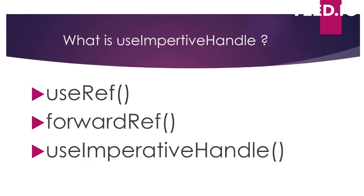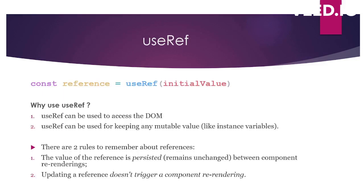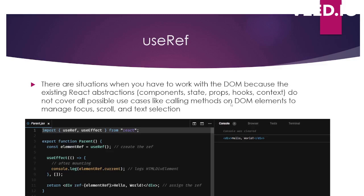Before understanding useImperativeHandle, let's understand useRef and forward refs. useRef is a hook that takes an initial value as a parameter and returns a reference. This reference has two usages: first, to access the DOM; second, to store mutable values — values that can change in the component — similar to instance variables in class components. Two important rules: the value of a reference remains the same between re-renders, and updating a reference does not trigger a re-render.